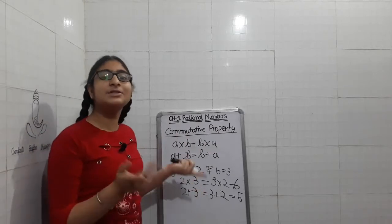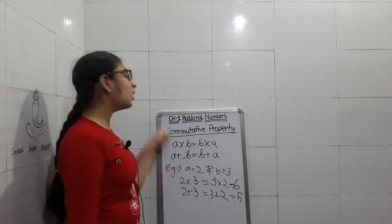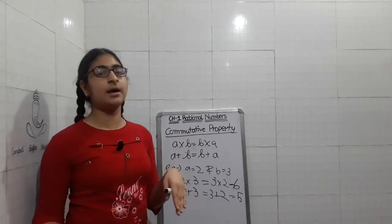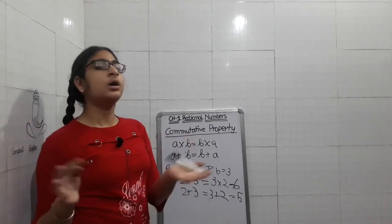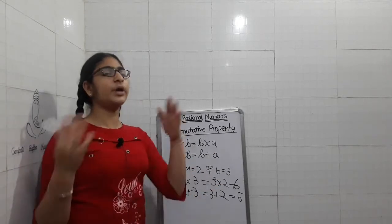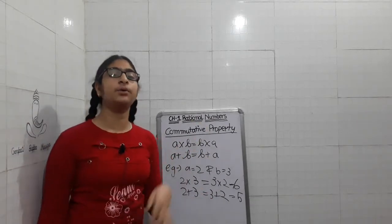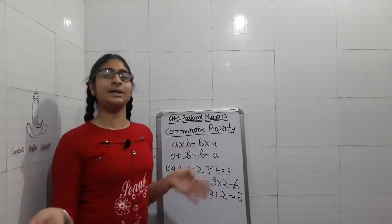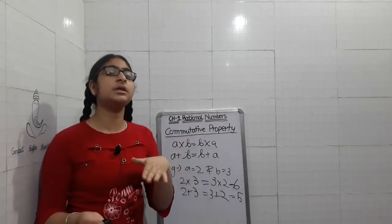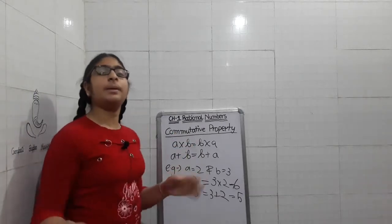Let's look at an example. If A equals 2 and B equals 3, then 2 into 3 equals 6, and 3 into 2 also equals 6 — nothing is different. Similarly, 2 plus 3 equals 5, and 3 plus 2 also equals 5. The answer is the same when you shift the terms.